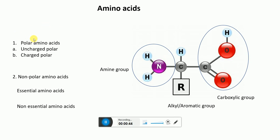Based on polarity, amino acids can be divided into polar and non-polar amino acids. Within polar, we have polar uncharged and polar charged. Also, based on whether we can synthesize them in our body, amino acids are divided into essential and non-essential amino acids. Now let me go directly into the mnemonics.